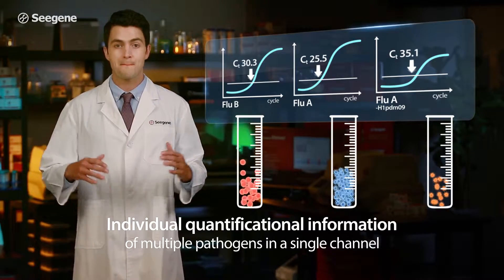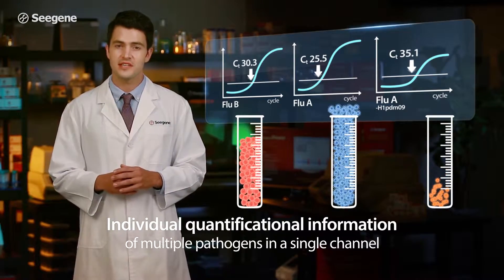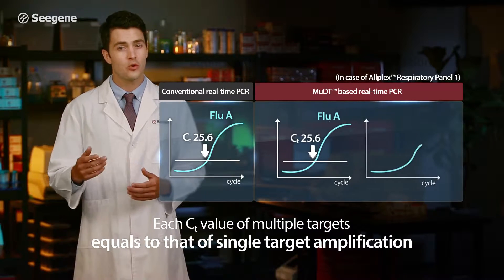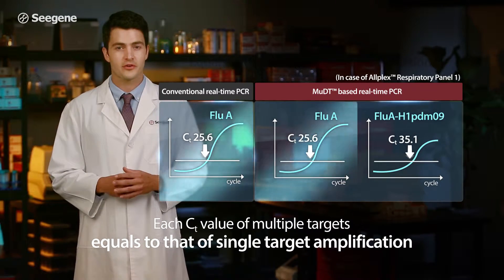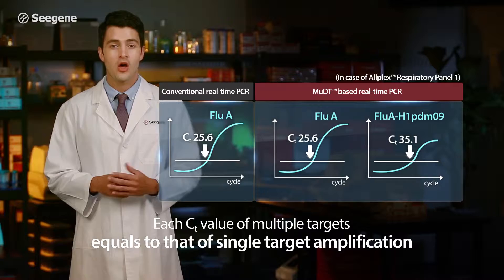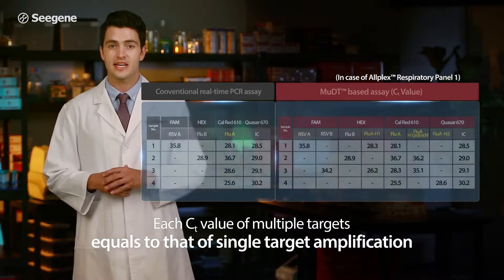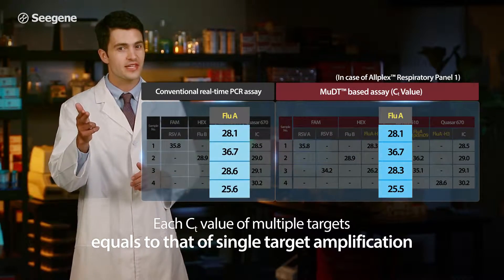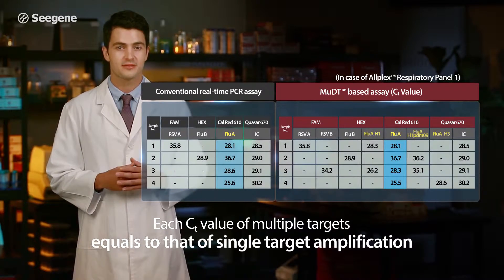MUDT technology makes it easy to quantify many individual pathogens in a single channel simultaneously. No compromises in data quality are required. Multiple target detection with MUDT technology is as accurate as conventional real-time PCR technique.